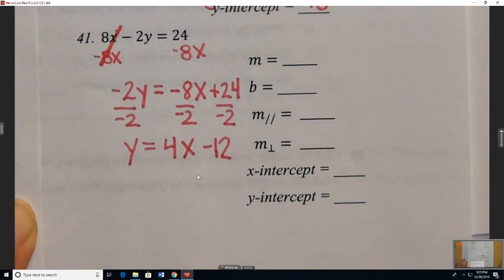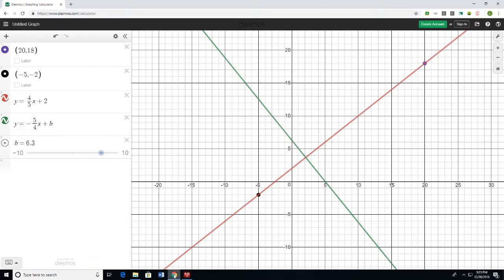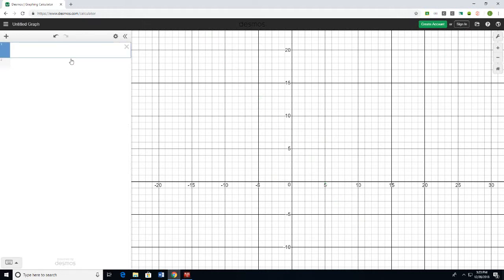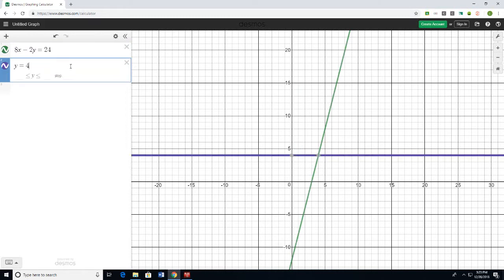Let's go ahead and pause for a minute from our work here and look at the graph of this. So if I go ahead and type in the original equation in standard form, it was 8x minus 2y equals 24. The green line is the standard form equation. But then if I type in the new equation we just wrote in slope-intercept form, this purple line here, notice it completely covers the green line.